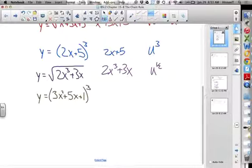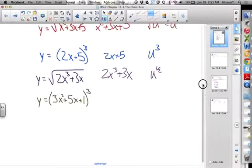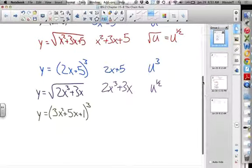Let's take a look at a couple others here. Suppose we have y equals the square root of x squared plus 3x plus 5. What would be our inner function, u? x squared plus 3x plus 5. And what would our outer function be? The square root of u. Or, more useful for differentiation, u to the 1 half.